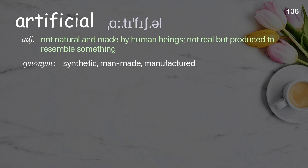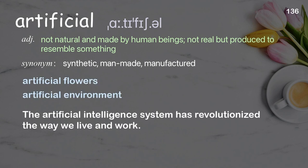Artificial: not natural and made by human beings; not real, but produced to resemble something. Examples: artificial flowers, artificial environment. The artificial intelligence system has revolutionized the way we live and work.